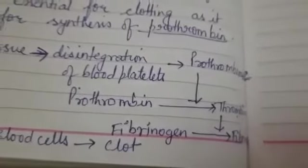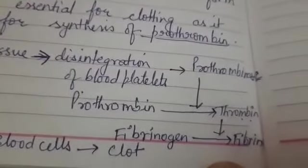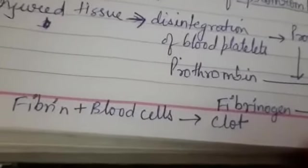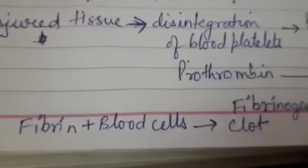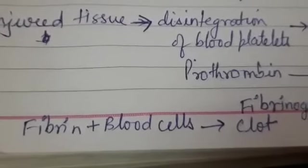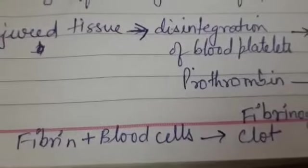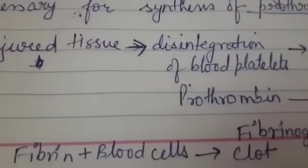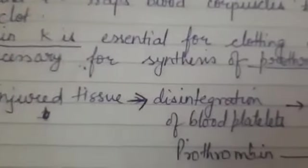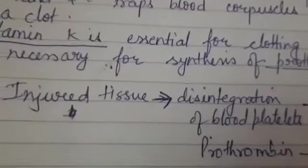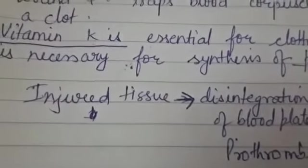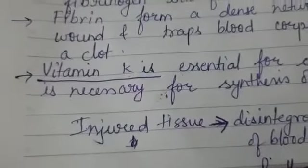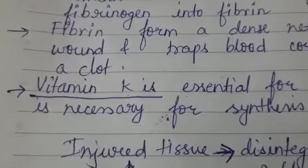These fibrins form a mesh-like network, and blood cells get trapped into it, resulting in the formation of a clot and thus preventing the loss of blood from the injured vessel. Calcium is very important in this process. Additionally, Vitamin K is essential for the synthesis of pro-thrombin in the liver. So along with the enzyme cascade, the mineral calcium and Vitamin K are both necessary for blood clotting.